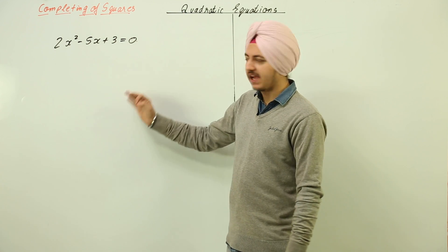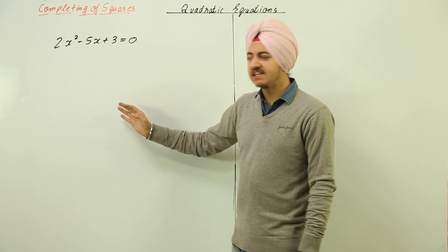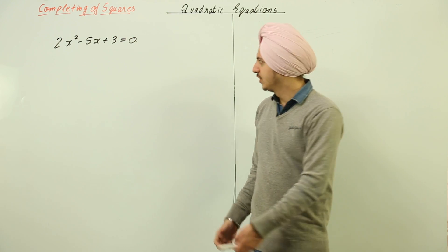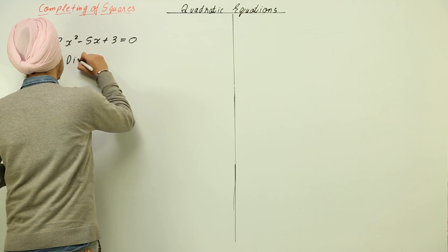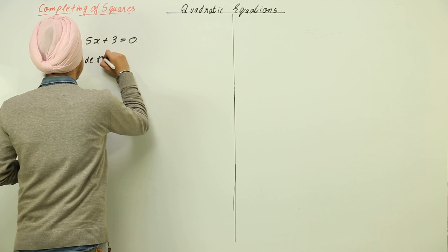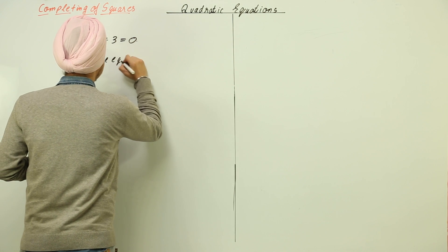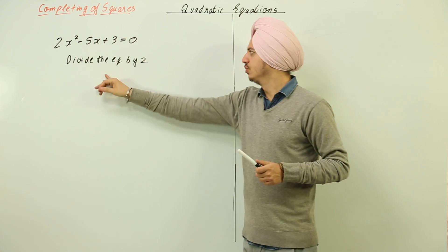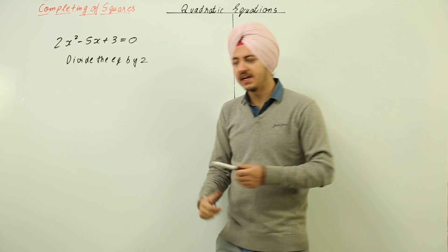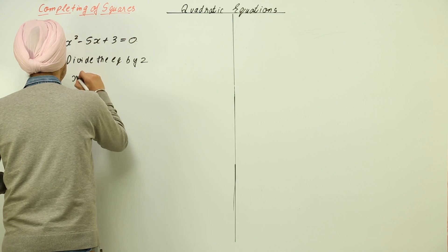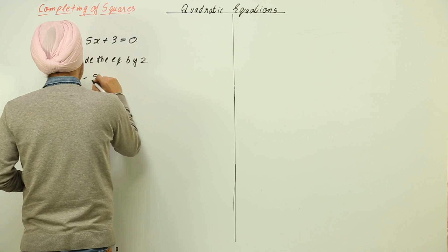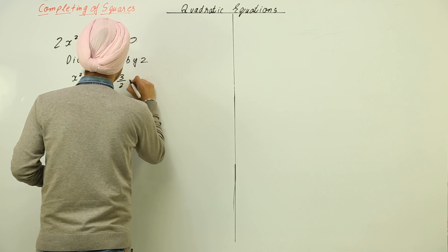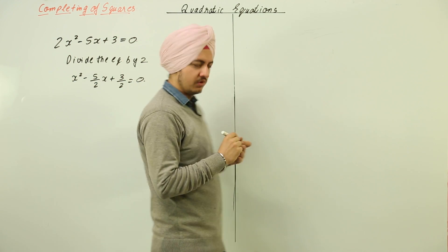The first step in completing the square is to make the coefficient of x² equal to 1. We do that by dividing the equation by 2. If we divide by 2, the coefficient of x² becomes 1, so the equation becomes x² minus 5/2 x plus 3/2 equals 0.